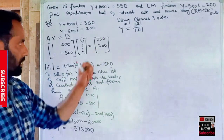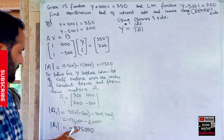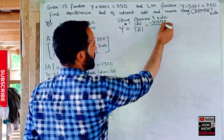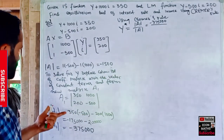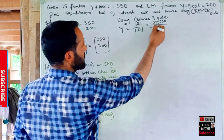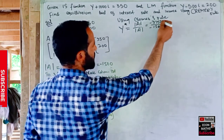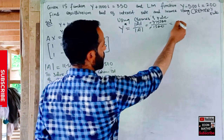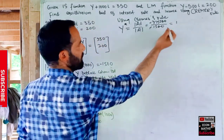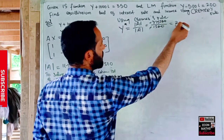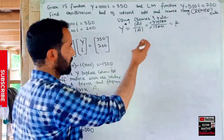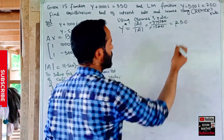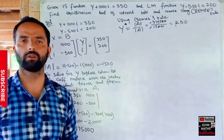The determinant of A1 is −375,000 and the determinant of the coefficient matrix is −1500. The negatives cancel, and 375,000 ÷ 1500 = 250. So the equilibrium level of income Y = 250.